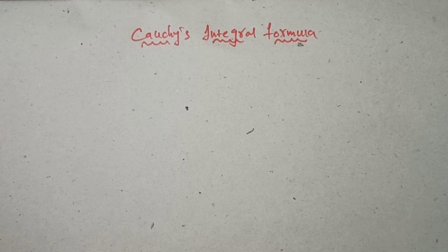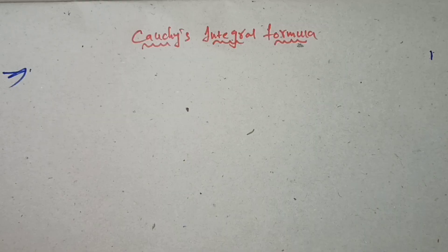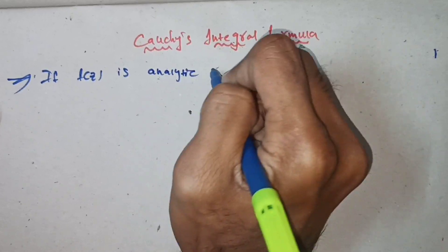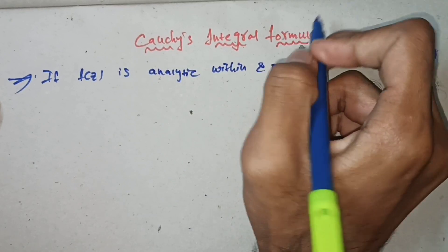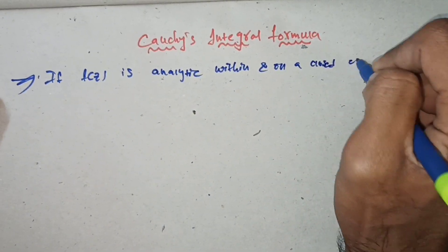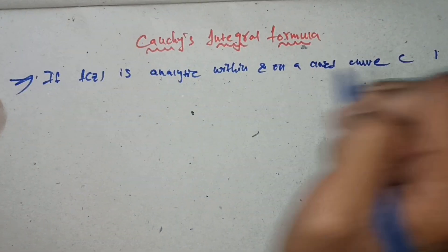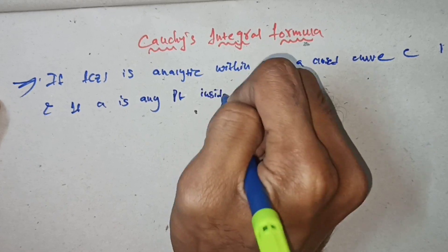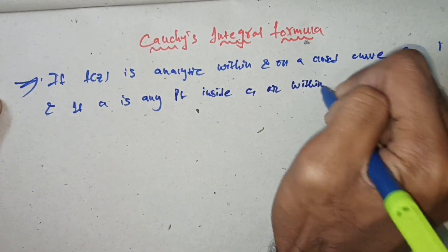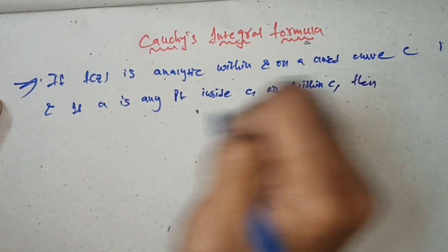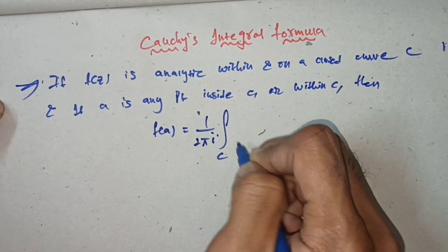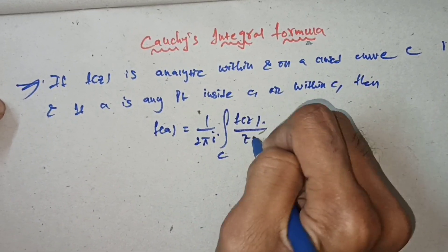Hi guys, welcome. In this section we shall see about Cauchy's Integral Formula. Now let's see the statement: if f(z) is analytic within and on a closed curve C, and if 'a' is any point inside C, then f(a) is equal to (1/2πi) times the integral around C of f(z)/(z−a) dz.